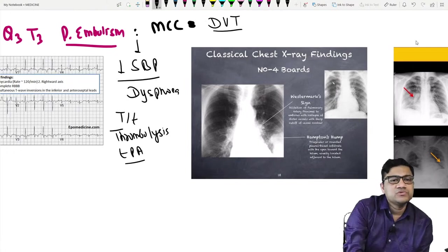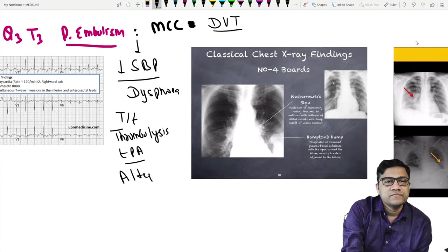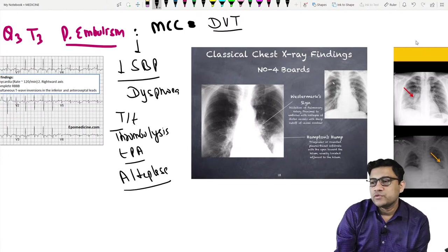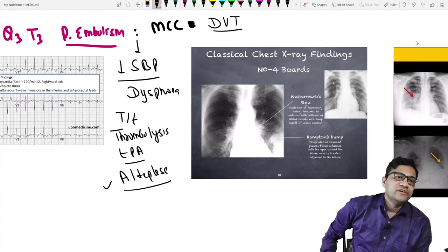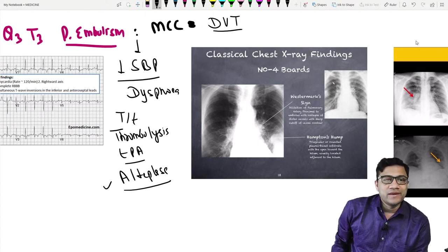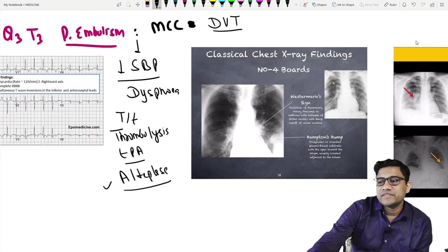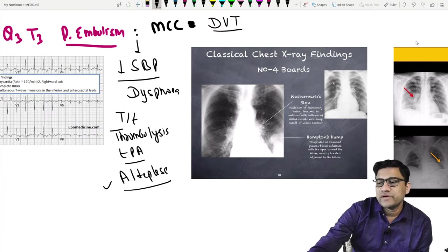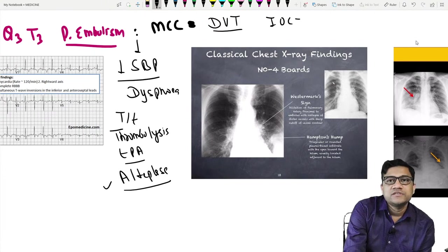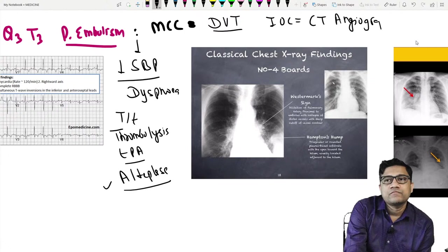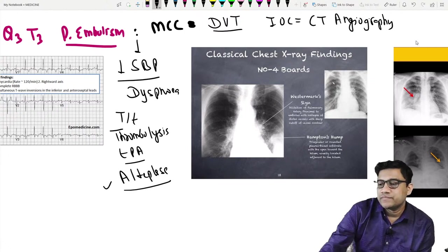We can use alteplase for thrombolysis. That is the treatment for pulmonary embolism. The investigation of choice is CT angiography. We can also check the D-dimer and the V/Q ratio, but CT angiography is the main investigation.